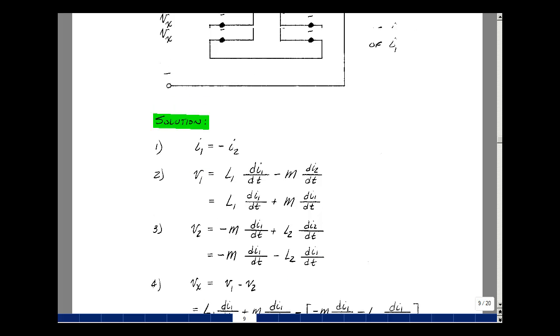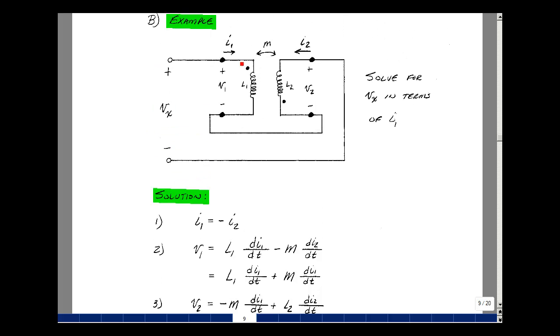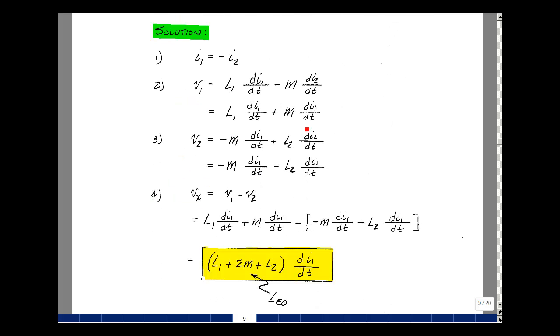Now I have to go back to my schematic, let me scroll back up here. The rise in voltage would equal the drops around the loop, so V sub x is equal to V1 minus V2. Here's my expression for V1, here's my expression for V2, let's see what we get now.